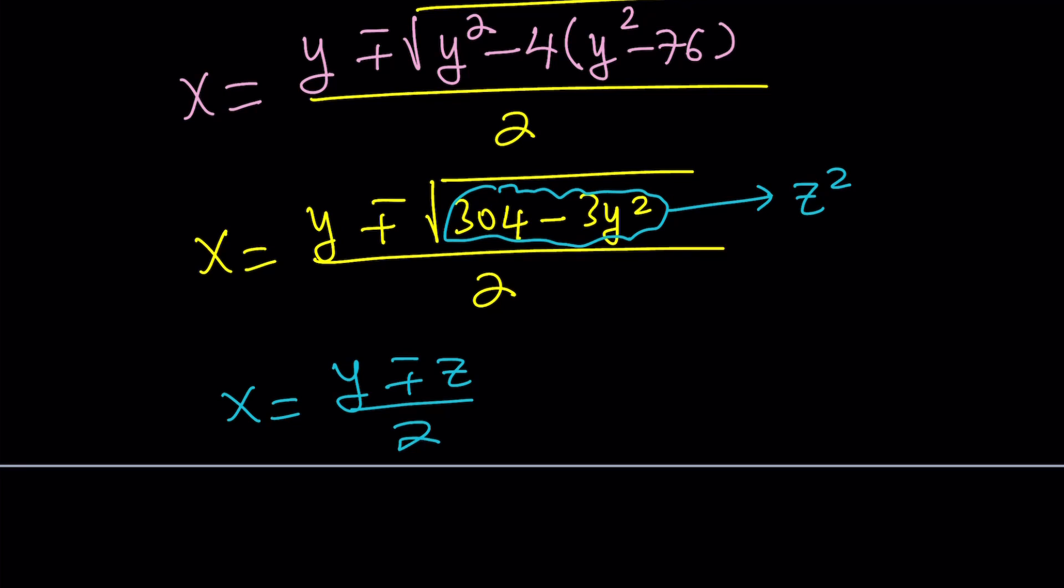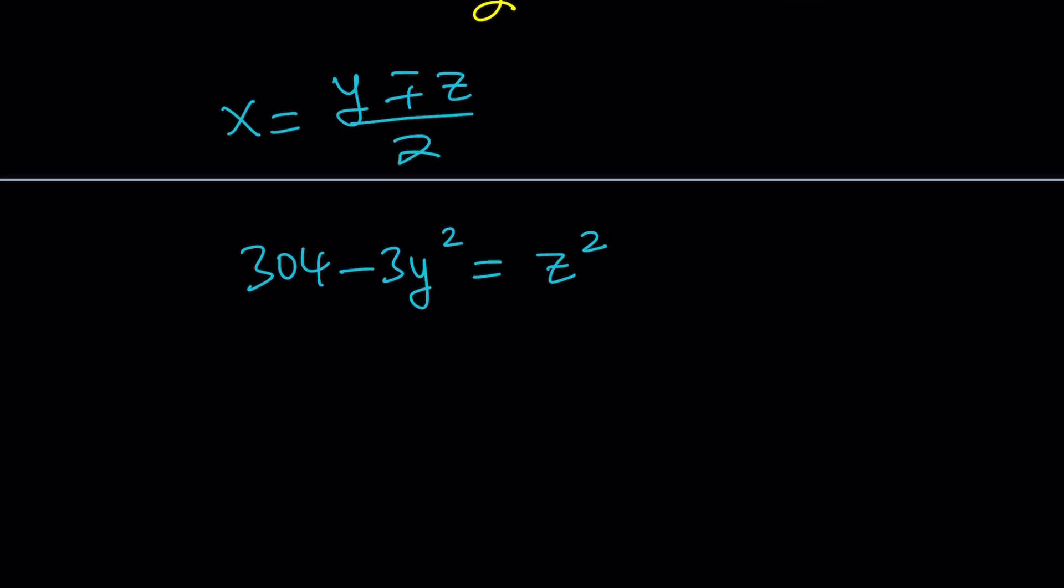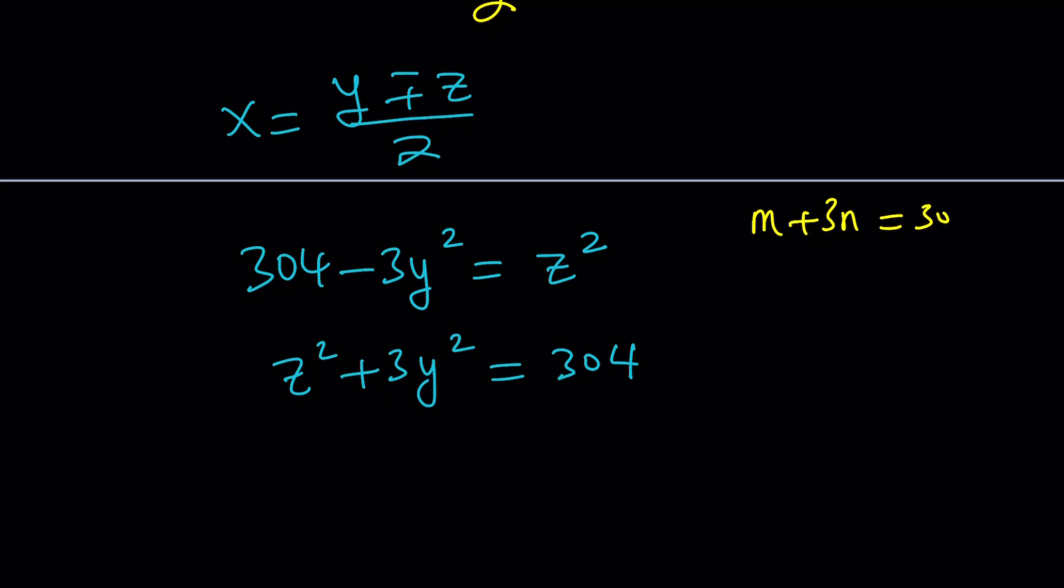Let's see what this means. We have 304 minus 3y squared equals z squared. Let's go ahead and put the 3y squared and z squared on the same side. So, we can kind of write the equation as z squared plus 3y squared equals 304. One other thing that I want you to notice, when you get an equation like this, this is actually a linear Diophantine equation, but we have the perfect square. So, it actually has fewer solutions because if you just had something like m plus 3n is 304, this equation would have more solutions because m and n don't have to be perfect squares. Make sense? But in this case, it's actually a little different.